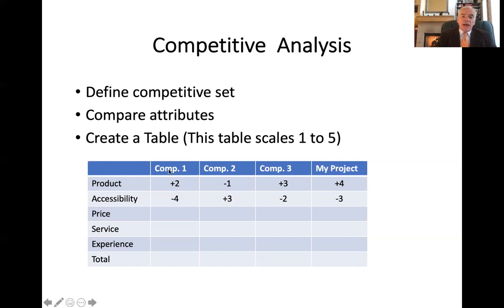When you add the rows, it gives you the total for your project. In this case, you were better with competitor one — plus two in your product — a little worse with competitor two at minus one, and much better than competitor three. The total was a plus four in the market.